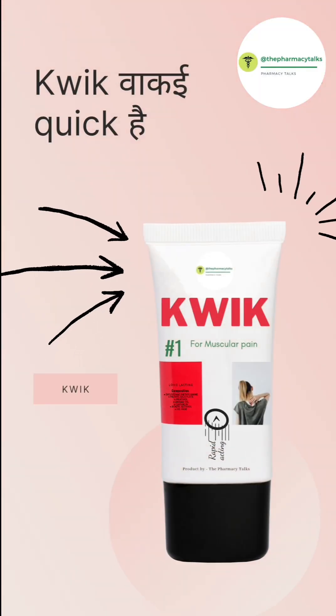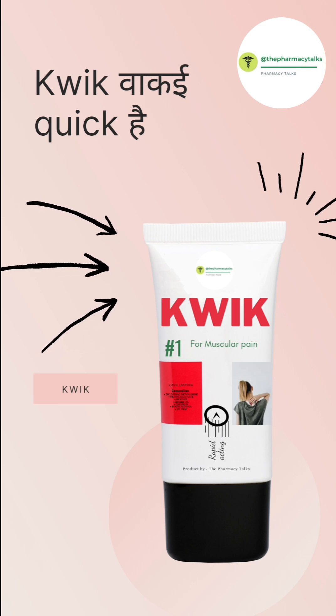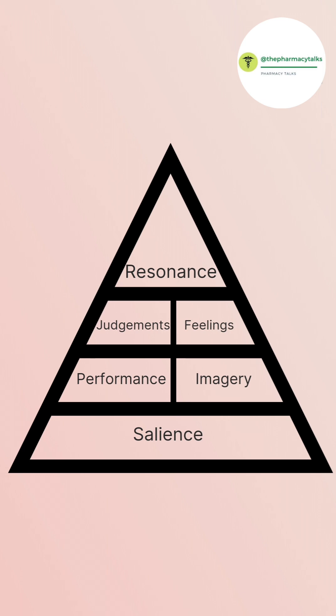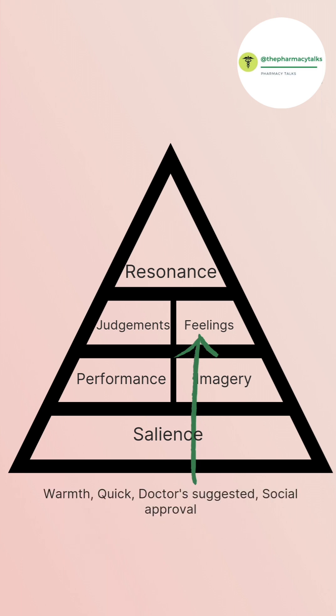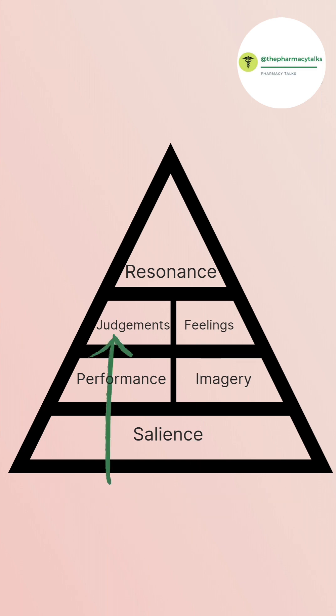Note that newly launched products are generally in the salience stage, but we are making only assumptions in this particular case that our product has done extremely well in the market, just for the better understanding of Keller's brand equity model. The next stage talks about brand response — simply, what about you? It involves positive and accessible responses. Consumers' feelings for Quick are: its quick warmth, doctors suggested, and socially approved. Consumers' judgment for Quick are: satisfaction, easily recognizable, competitive, and innovative.